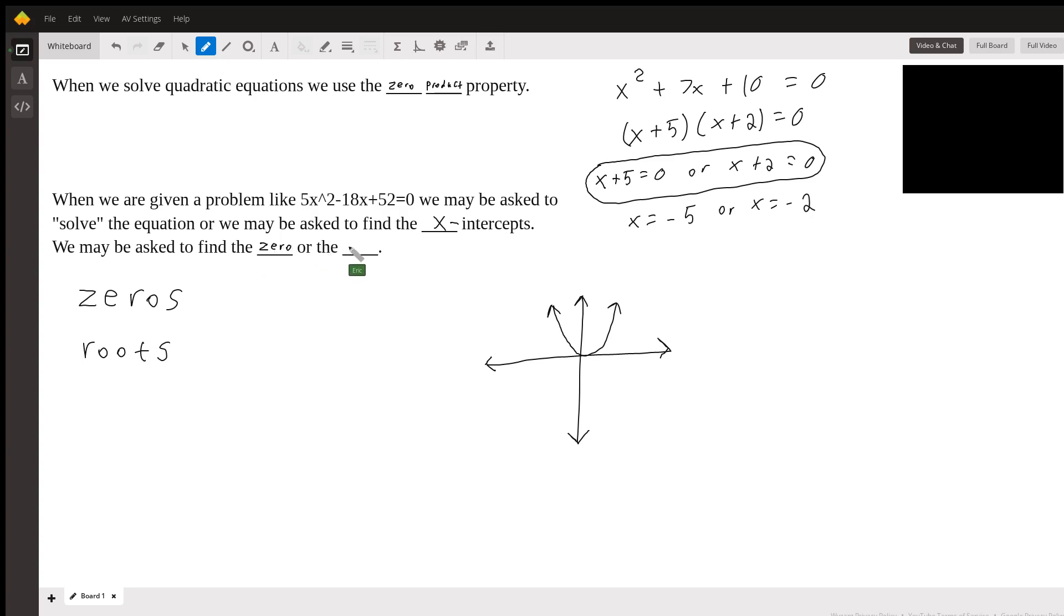I'm trying to think if there's anything else, but yeah, mainly you're going to say zeros or the roots or the x-intercepts. Those are probably the only two I can think of. Now there may be a third one, but this should be totally fine. The zeros or the roots are just the same thing.